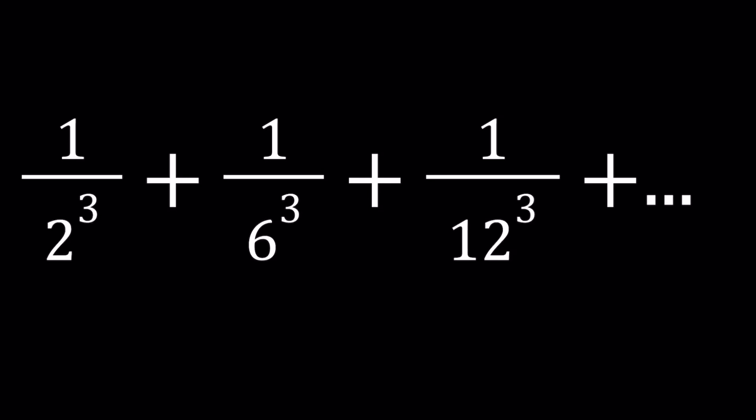Hello everyone. In this video we're going to be solving a very nice problem with infinite series. We have 1 over 2 cubed plus 1 over 6 cubed plus 1 over 12 cubed and so forth, all the way up to infinity, where the general term is 1 over n cubed times n plus 1 cubed. In other words, we are adding the reciprocal of the cubes of triangular numbers.